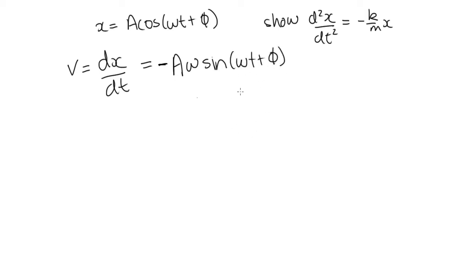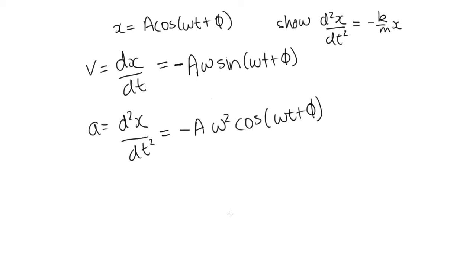Now we need to take the second derivative of this function. So the acceleration is equal to d squared x dt squared. And this is equal to minus. Now when we take the derivative of sine function, we end up with cos. We also need to take the derivative of what's inside. So this is A omega squared cos omega t plus phi.